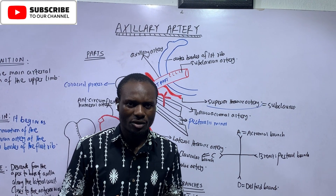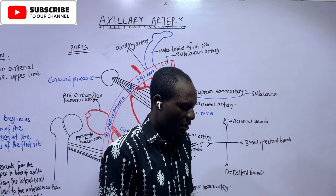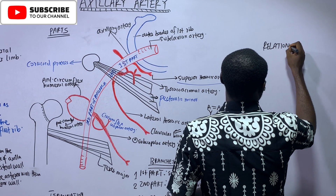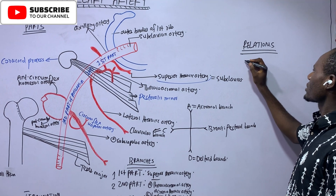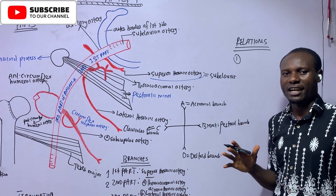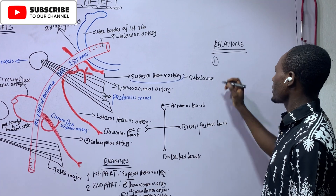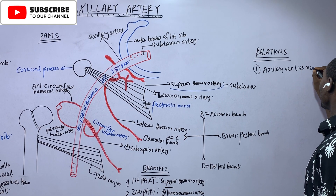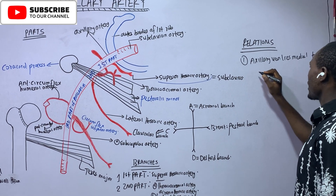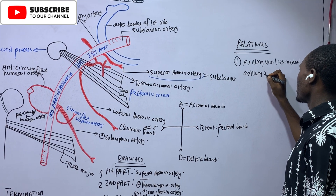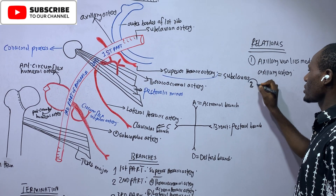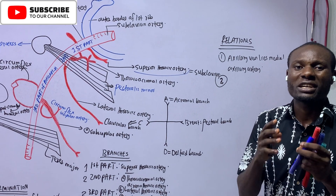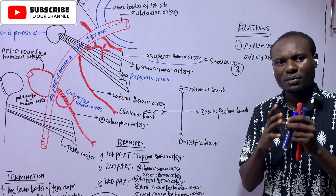Up next are the relations. What are the relations of the axillary artery? The axillary vein lies medial to the axillary artery throughout its course. Other notable relations concern the second part of the axillary artery.